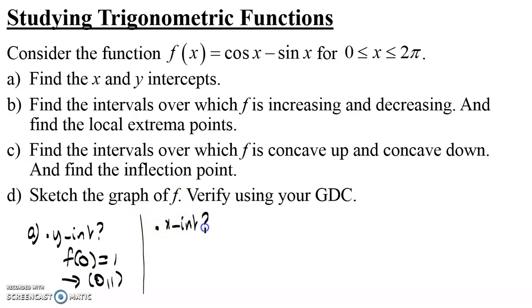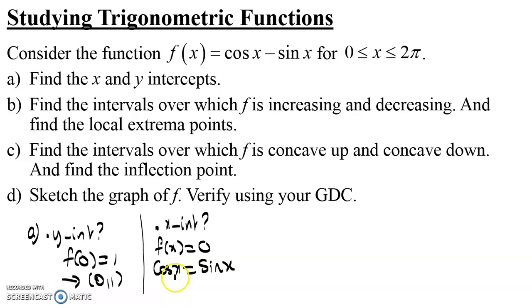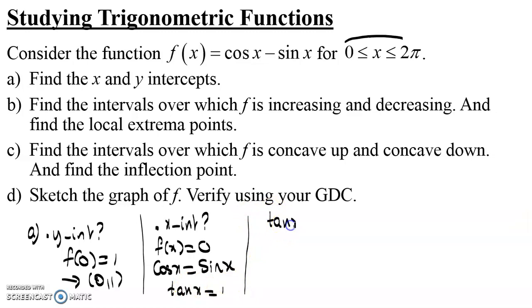Regarding the x-intercept, we need to find values of x for which y is 0. We set f(x) = 0, which means cosine x equals sine x. This is not in the form sine equals sine or cosine equals cosine, but cosine and sine being equal means tan x equals 1. These two equations are equivalent, and we're solving between 0 and 2π.